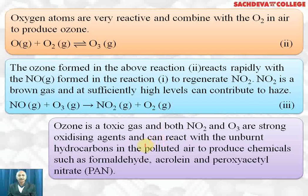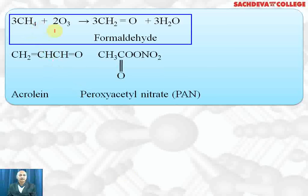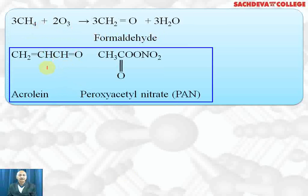Both NO₂ and NO₃ are strong oxidizing agents and can react with the unburnt hydrocarbons in polluted air to produce chemicals like formaldehyde, acrolein and peroxyacetyl nitrate (PAN). In the reactions, hydrocarbons react with ozone to form formaldehyde plus water, and further react to form acrolein (CH₂=CH-CHO) and peroxyacetyl nitrate. PAN contains a peroxide linkage and an acetyl group.